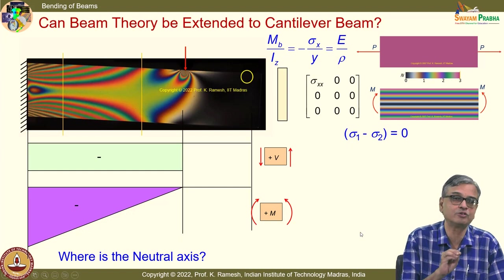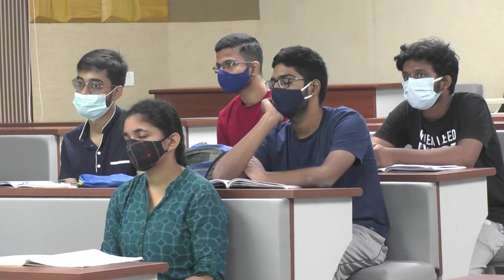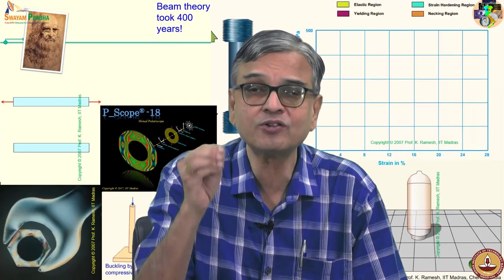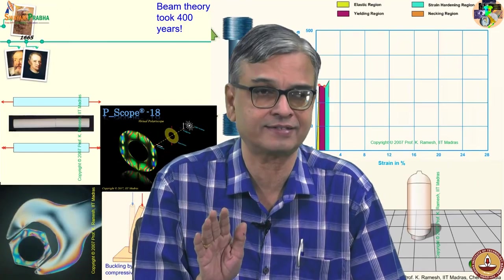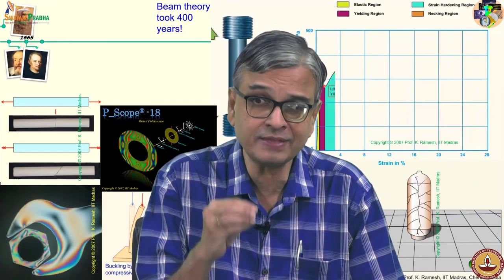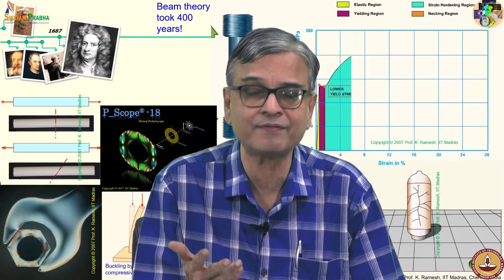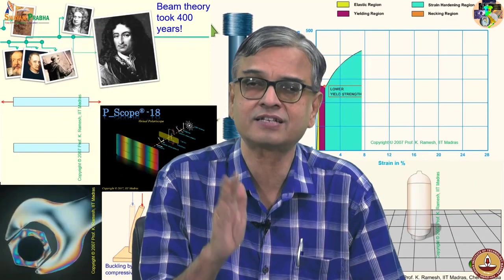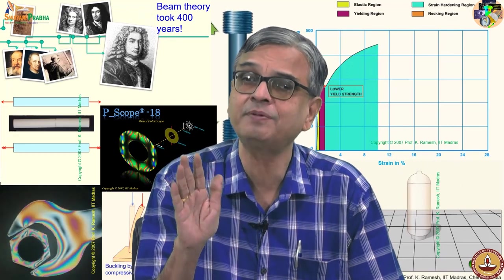Even though the cantilever beam warps, there is no coupling between shear and bending as long as you have a slender member and the depth of the beam is very small compared to the length. If the depth is comparable to the length, you can have coupling effects — that is considered a deep beam and a different theory is developed. Such problems are not done in this course.